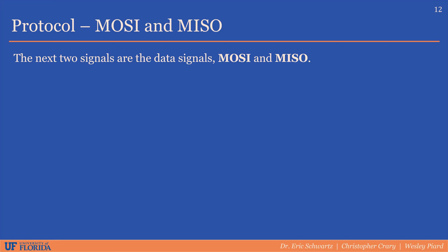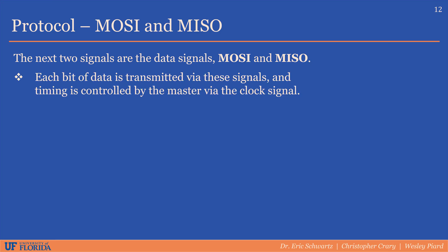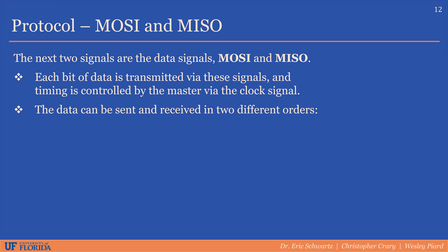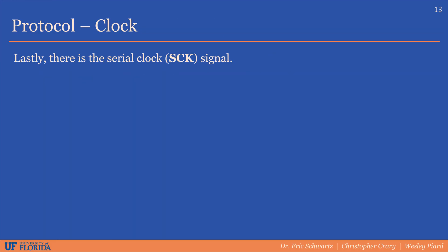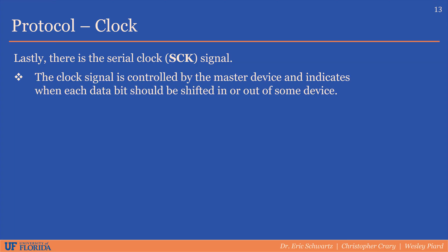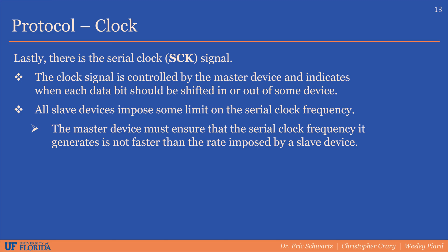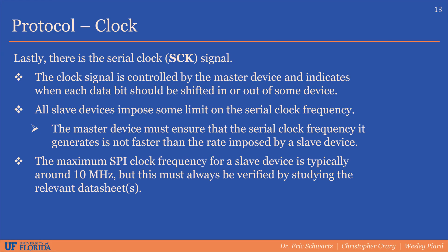Next we have the two data lines, MOSI and MISO. Each bit of data is transmitted and received via these signals, with timing controlled by the master via the clock signal. Data can be sent in two orders: most significant bit first or least significant bit first, often mandated by the slave device. The serial clock is generated by the master and controls when each data bit is shifted in or out. Each slave device will have a maximum clock frequency limit, and it is the programmer's responsibility to ensure the master's clock frequency never exceeds that limit, typically found in the device's datasheet.